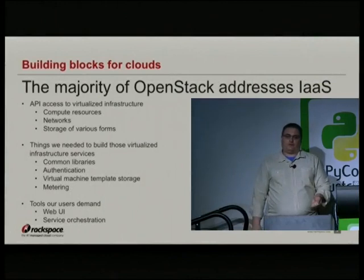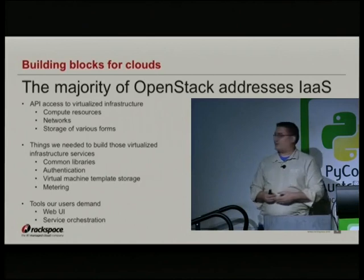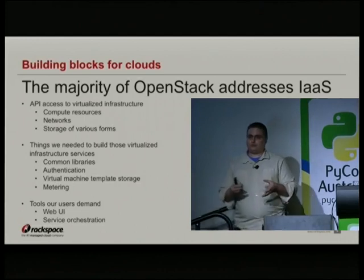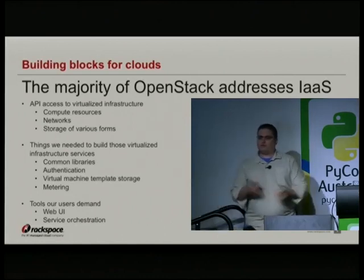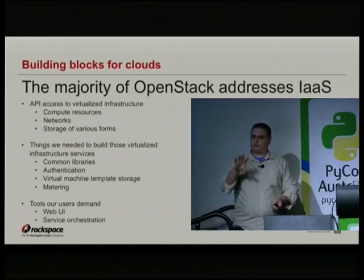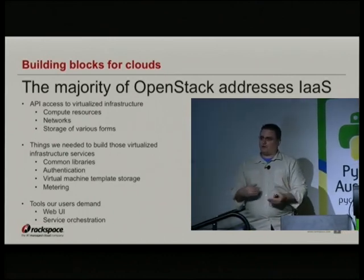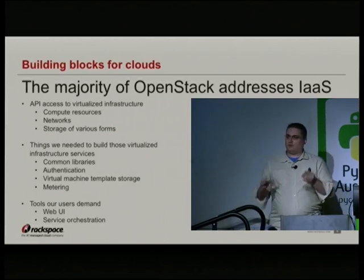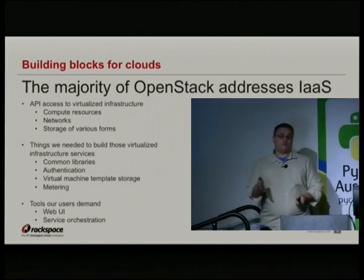There are also tools that users demand: a web UI and a command line client — they're just API clients, there's nothing magical about them. And people ask for service orchestration a lot too. Service orchestration is where you have a config file and you say, let's pick on WordPress — I want a WordPress blog with a front end and a database server on a private network, and my blog about cats is going to be super popular so we'll have a load balancer. You express that in a config file, throw that config file at us in an API call and we just do it. If you use Amazon CloudFormation, it's much like that.